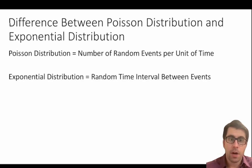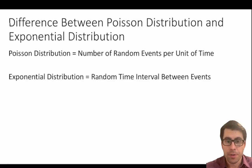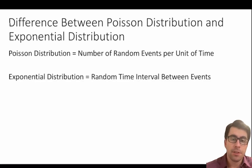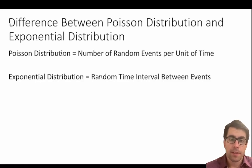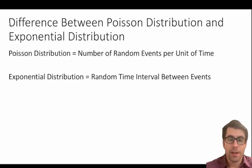A Poisson distribution is a discrete probability distribution — it models discrete events, or those events which can be counted. An exponential distribution, on the other hand, is a continuous distribution, meaning the sum of the probability underneath the curve is equal to one, and the values can take on an infinitesimal number of values underneath that curve.